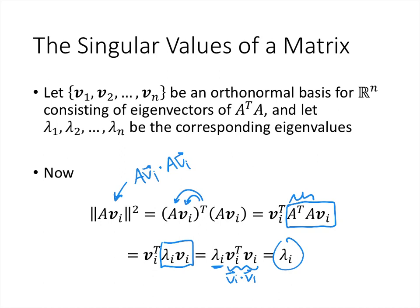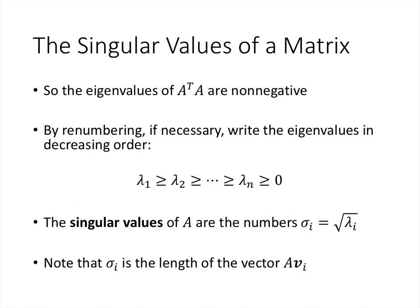The norm of A·vᵢ squared is the eigenvalue λᵢ. One consequence is that the eigenvalues of A transpose A are all non-negative, because they're something squared — so they might be zero, but they're definitely not negative. We write the eigenvalues in decreasing order: λ₁ is the biggest, down to λₙ ≥ 0. The singular values are the square roots of each λᵢ — that is, σᵢ = √λᵢ, which equals the norm of A·vᵢ.